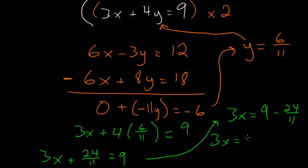So on the right hand side we'll use the denominator of 11, and 9 times 11 is just 99 minus 24. And then we can simplify, 3x is equal to 75 divided by 11.